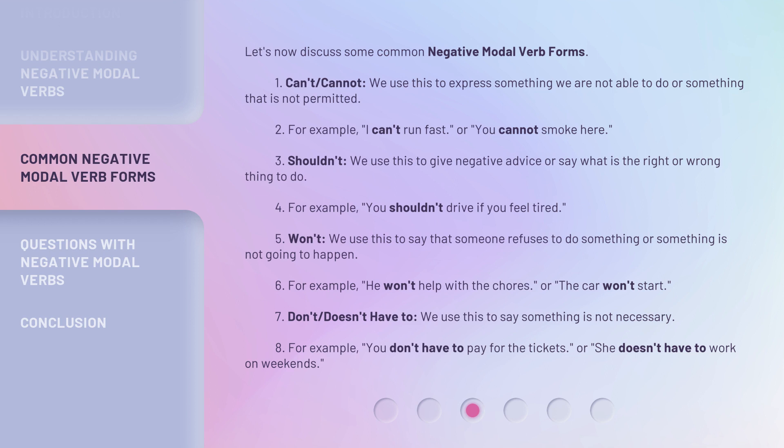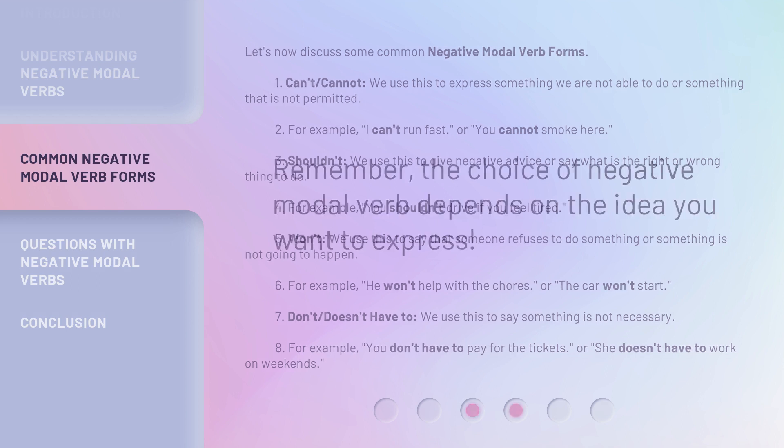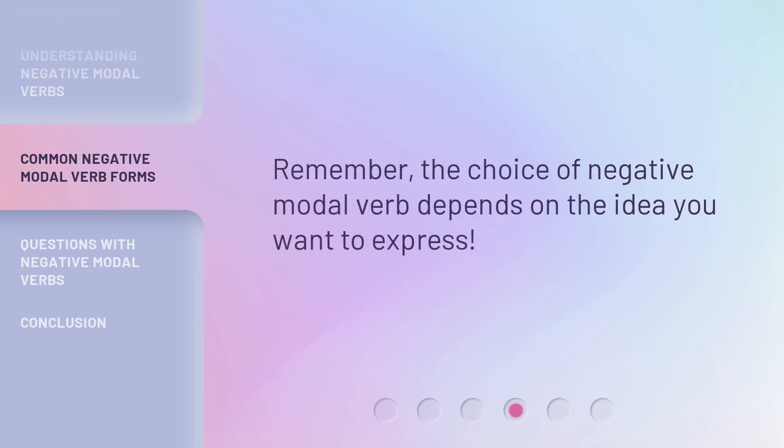Or, the car won't start. 7. Don't, doesn't have to. We use this to say something is not necessary. For example, you don't have to pay for the tickets. Or, she doesn't have to work on weekends. Remember, the choice of negative modal verb depends on the idea you want to express.